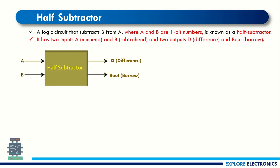Now let us see half subtractor. We can use the same method of half adder to get the half subtractor logic. Here again A and B are the inputs, but the outputs are D and B_out, where D is called the difference and B_out is the borrow.